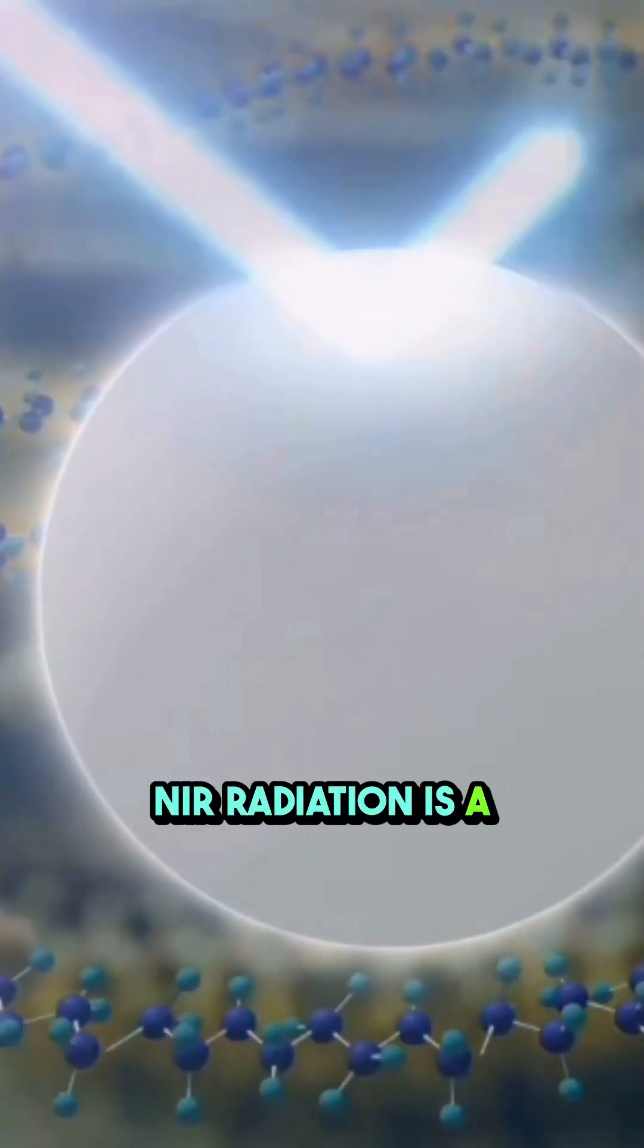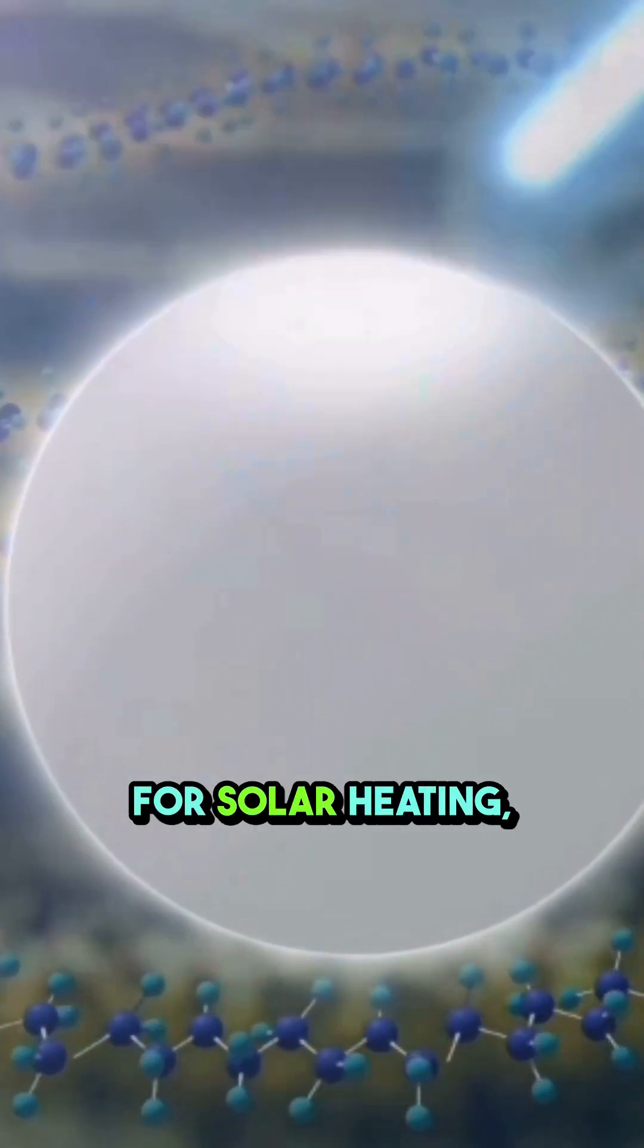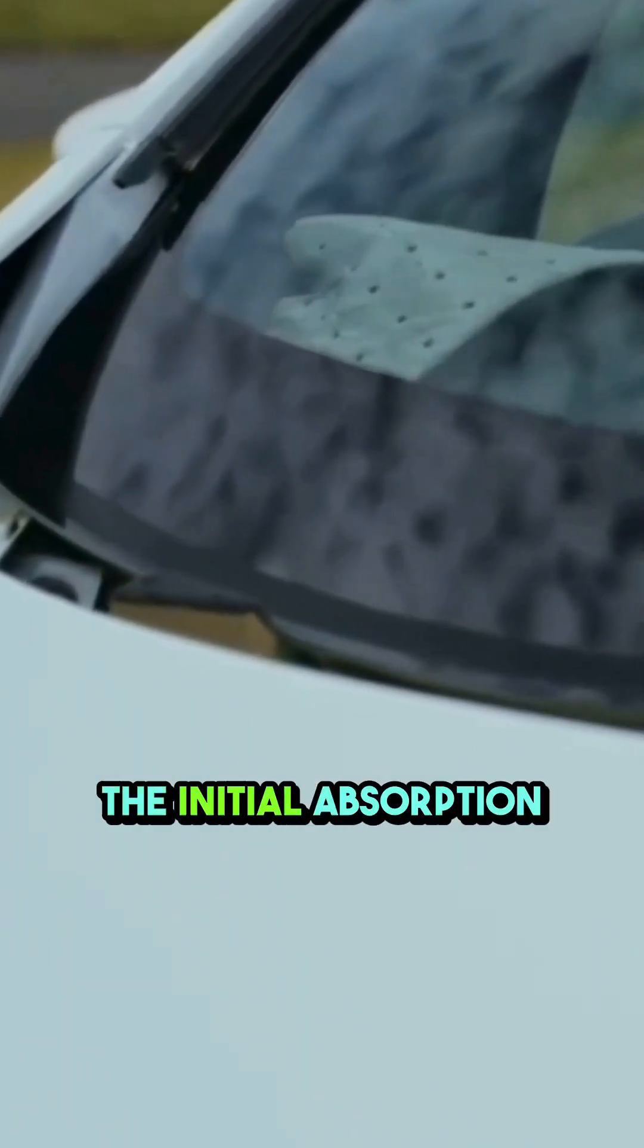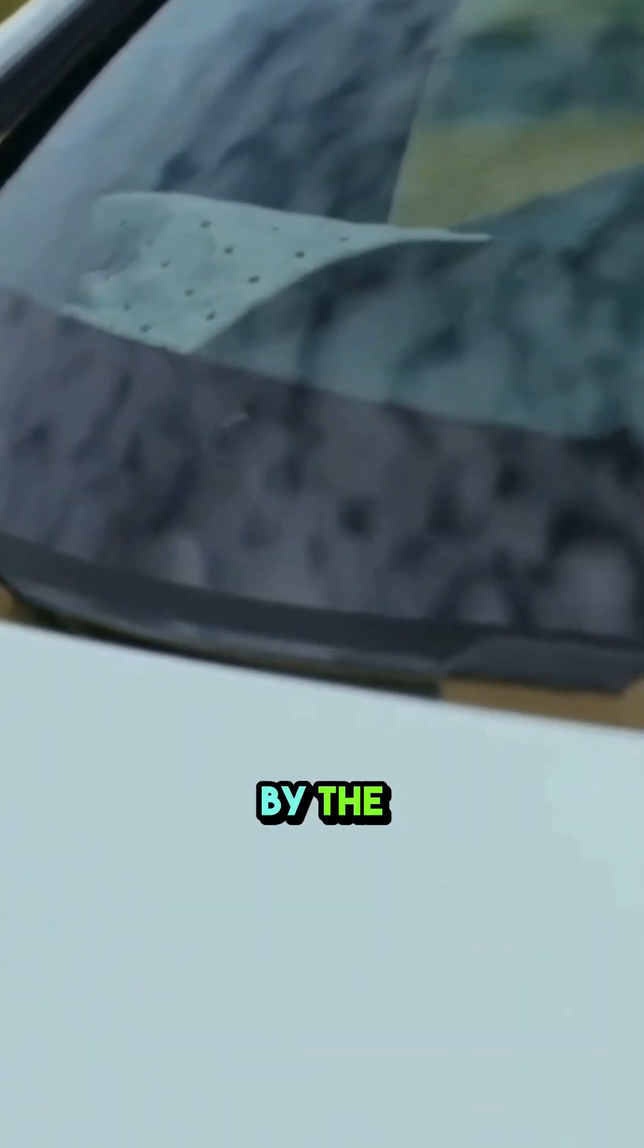NIR radiation is a major component of solar heating, and by reflecting it, we minimize the initial absorption of heat by the car's surface.